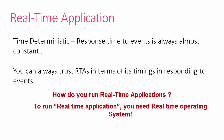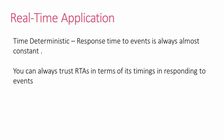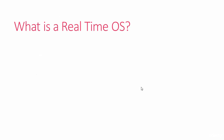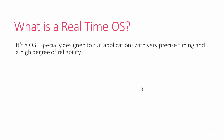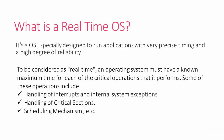What you need is a real-time operating system that is customized to meet the real-time application's timing requirements. A real-time OS is specially designed to run applications with very precise timing and a high degree of reliability. To be considered real-time, an operating system must have a known maximum time for each of the critical operations it performs, including handling of interrupts and internal system exceptions. Unlike general-purpose OS, in RTOS the interrupt latency is kept as minimal as possible.